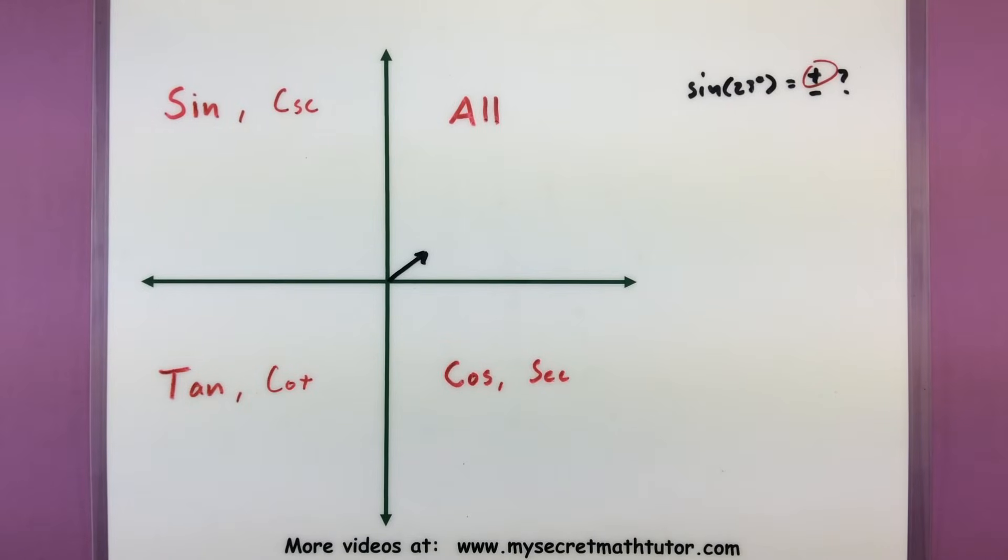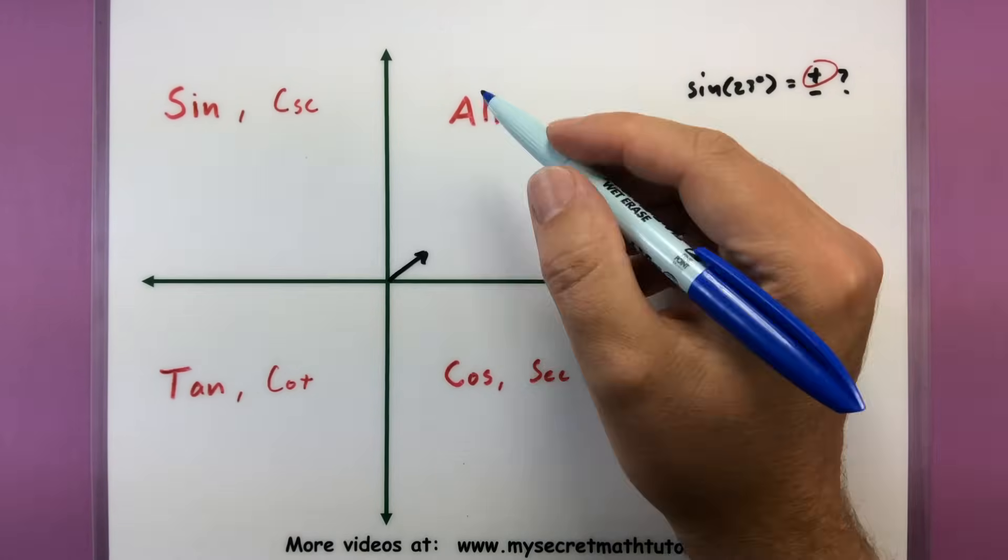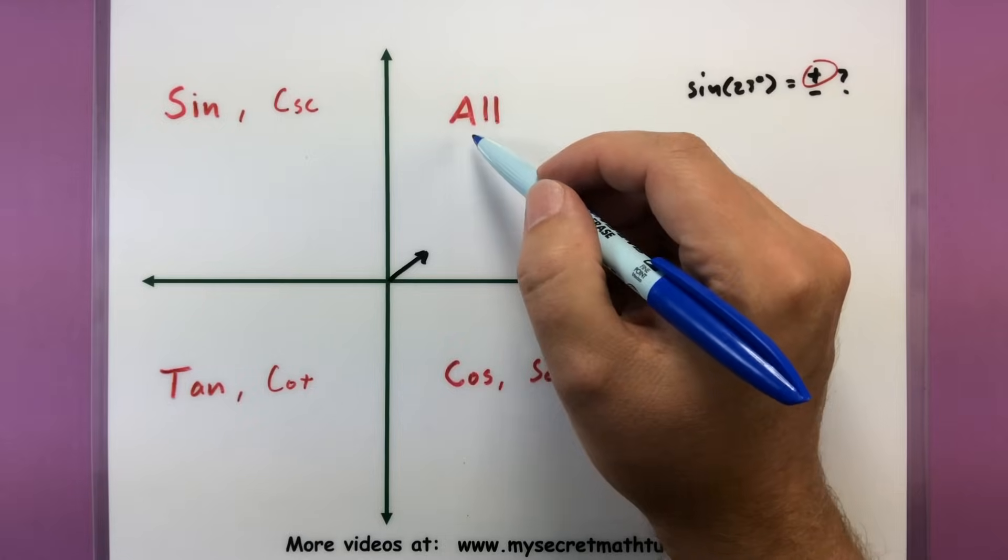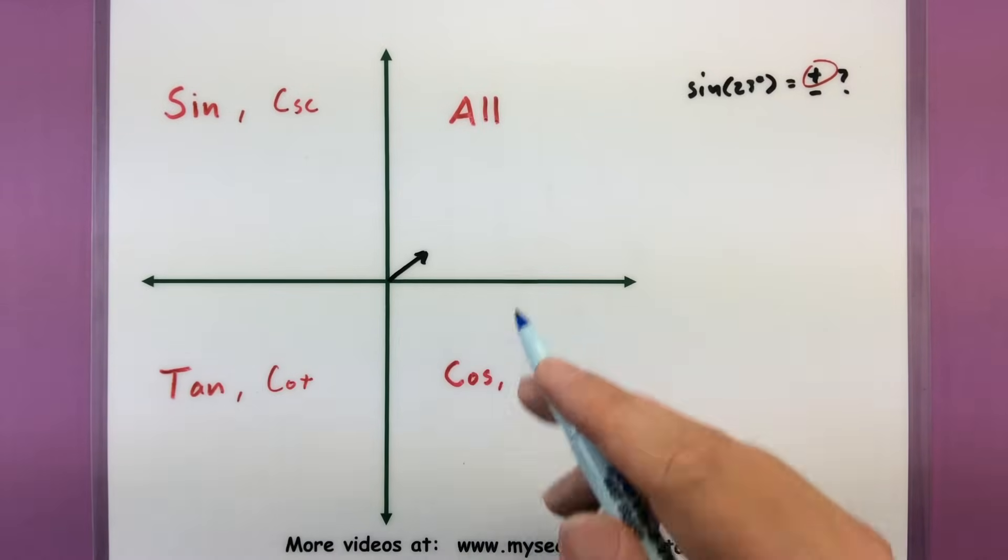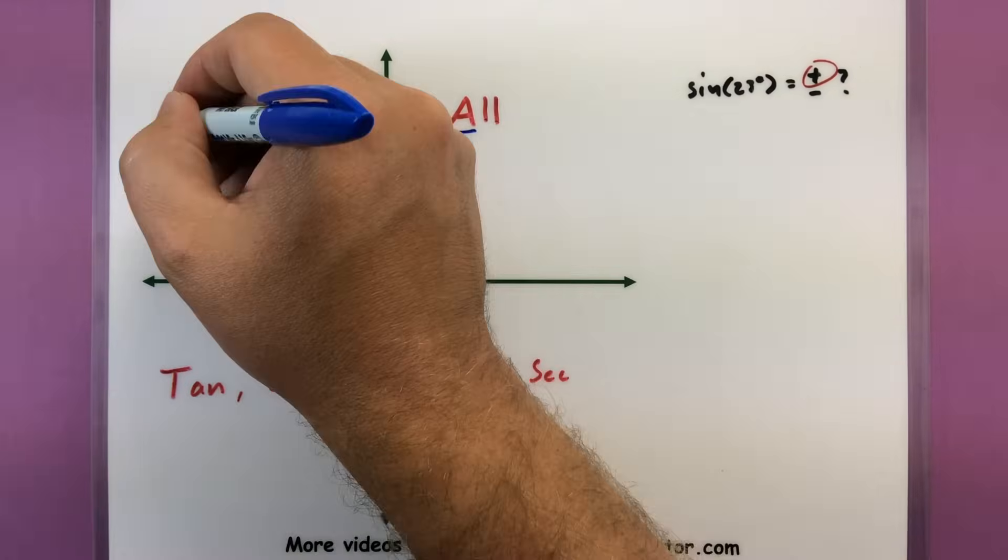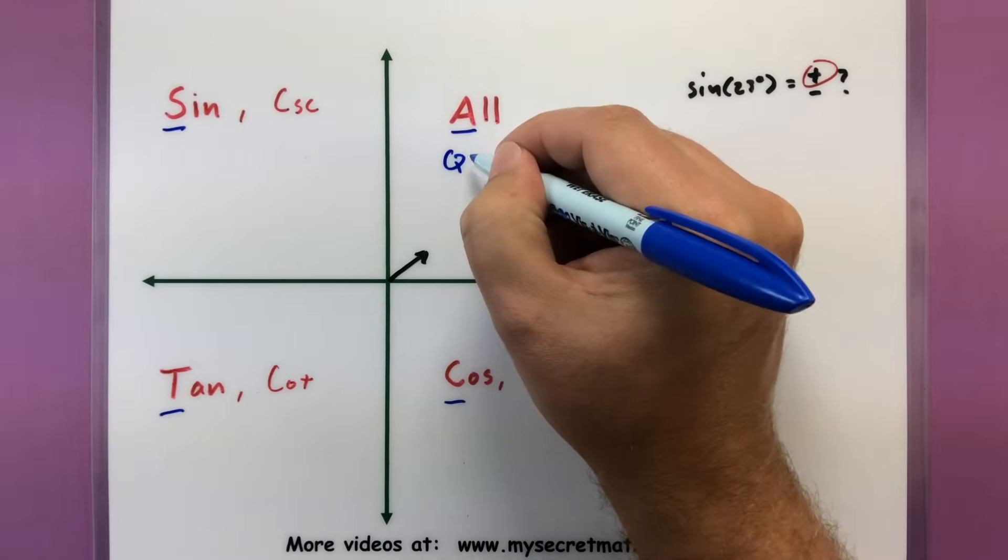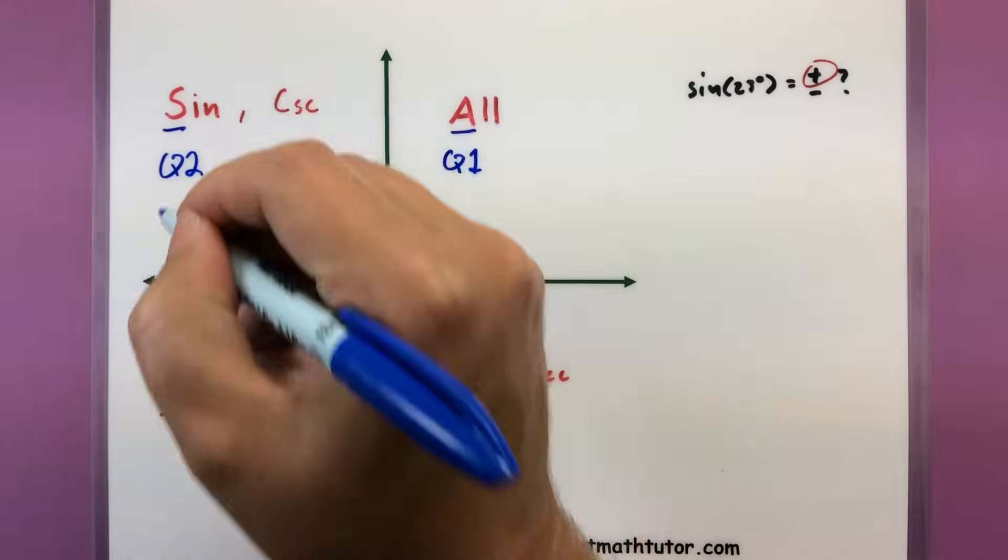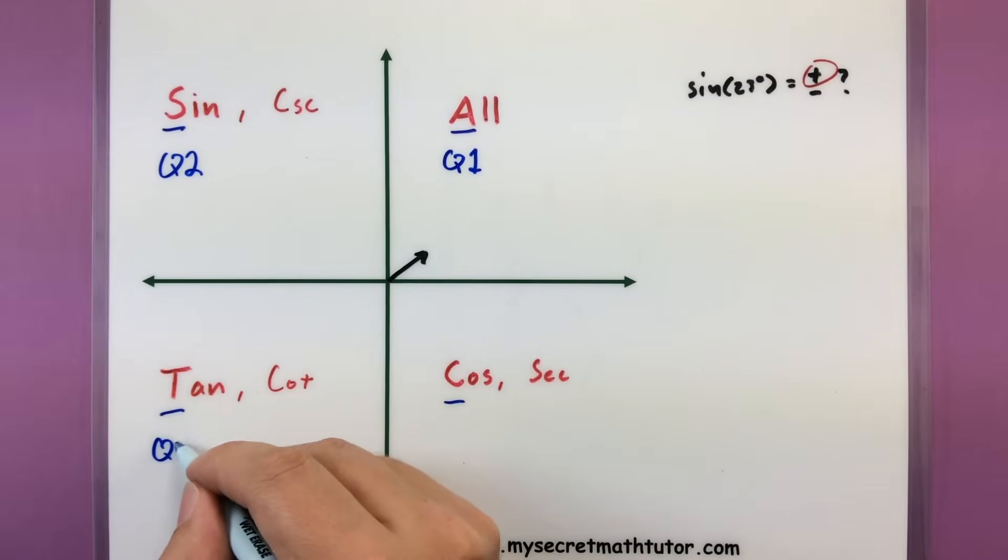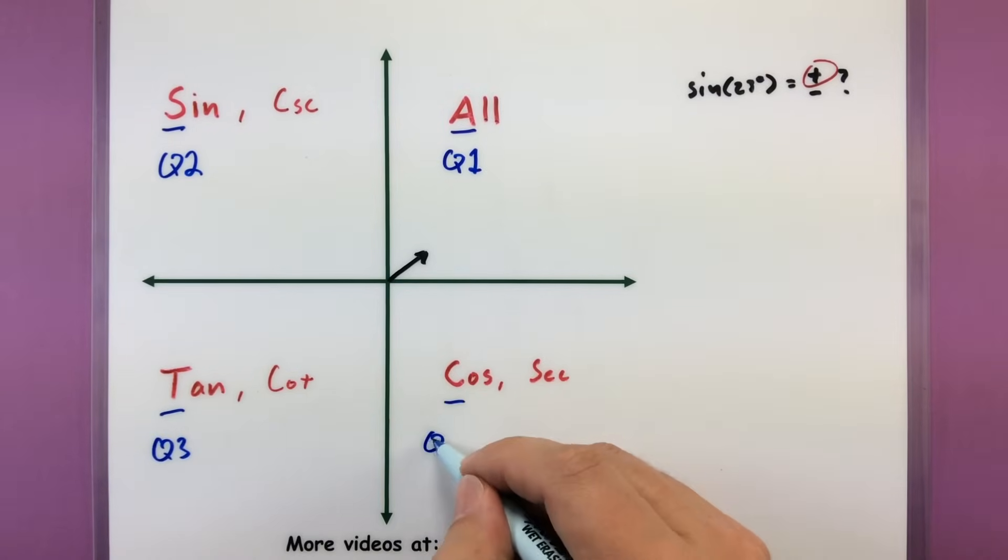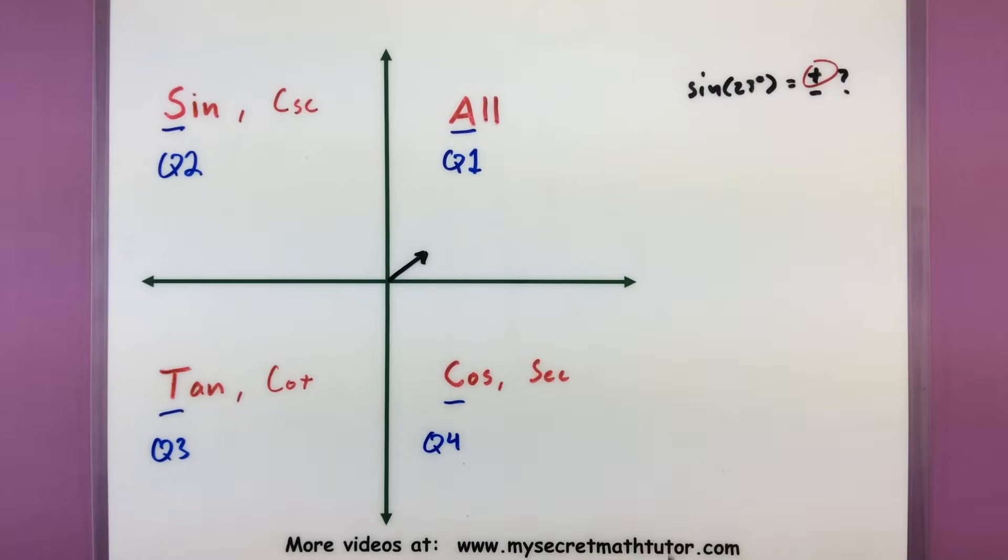Now that you know which functions will be positive in which quadrant, how can you remember this really quickly? A great mnemonic for this is to remember that all students take calculus. You mark them off in the order of the quadrants: quadrant one is all, quadrant two is students, quadrant three is take, and quadrant four is calculus. All students take calculus.